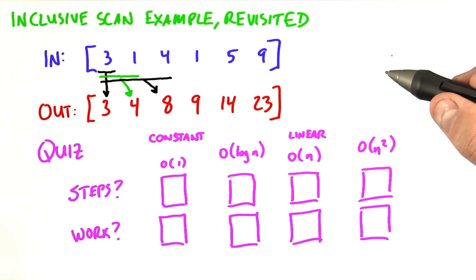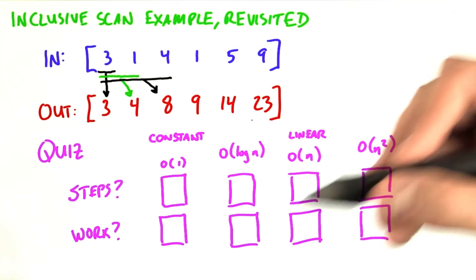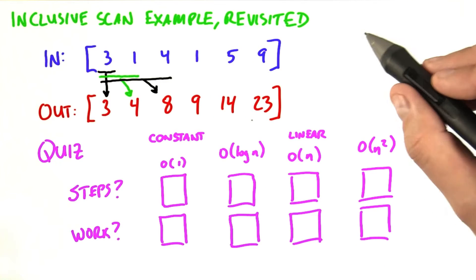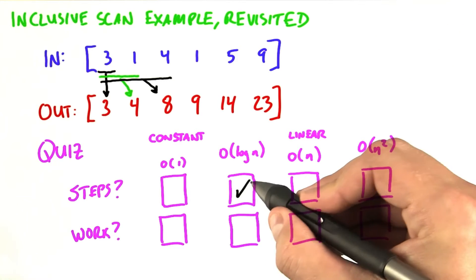The reductions all have different sizes, so to get the overall step complexity, we need to look at the largest reduction, which is a reduction at the end here of all n elements. So the number of steps to reduce n elements, and thus the number of steps to perform this entire computation, is order of log n.